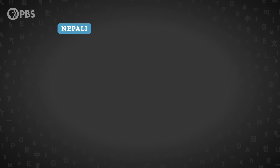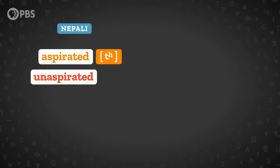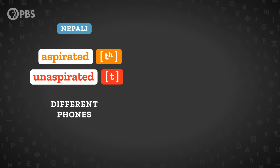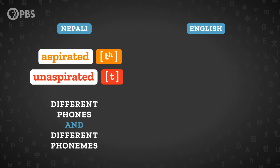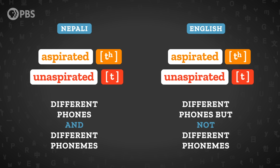Because the distinction between t and t is meaningful to Nepali speakers, we say that these two sounds are different phonemes in Nepali. So in Nepali, aspirated t and unaspirated t are both different phones and different phonemes. In English, these same sounds are different phones, but they're not different phonemes.